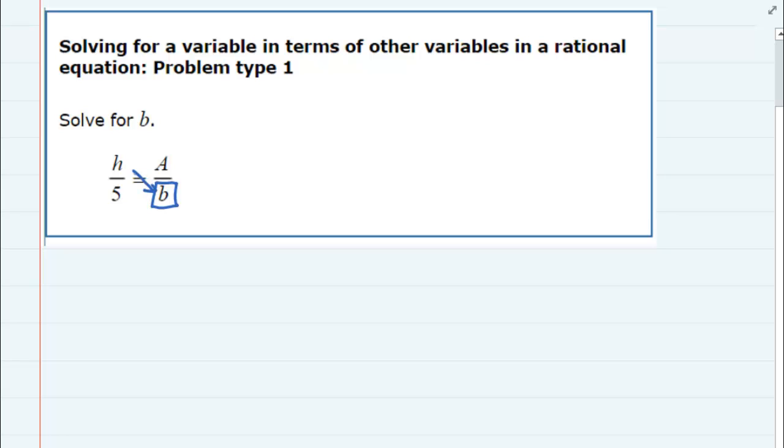we can cross multiply. And that means that if we multiply this way, we would have h times b. That would have to be equal to what we get if we multiply this way,